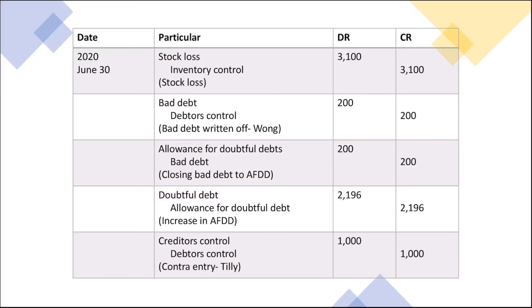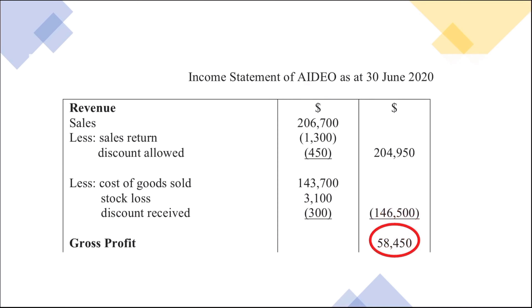The stock loss is recorded in the General Journal, where we debit stock loss and credit inventory control. This will then allow us to calculate the gross profit as seen here.